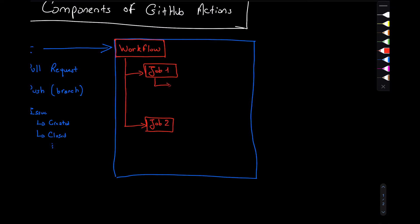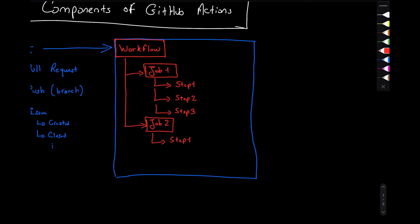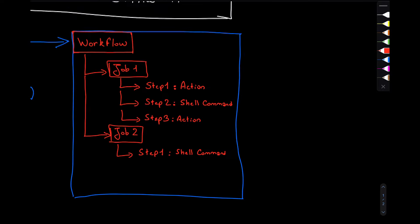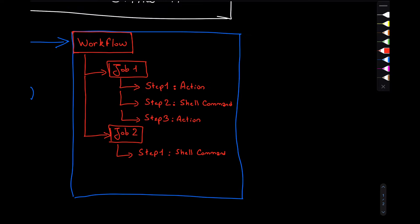In this example, we're going to have two jobs — job one and job two. Each job is composed of one or multiple steps: step one, two, three for job number one, and step one for job number two. Each step could be either an action or a shell command. Let's not confuse action here with GitHub Actions — action here refers to the abstraction of a bunch of code that is designed to do something or some activity.